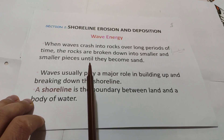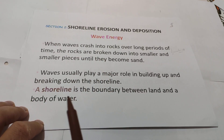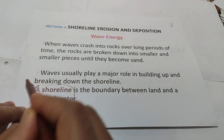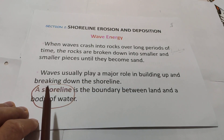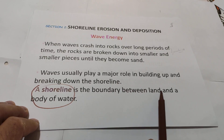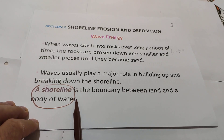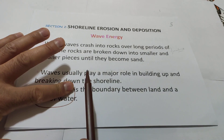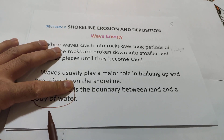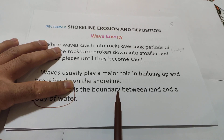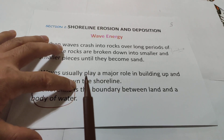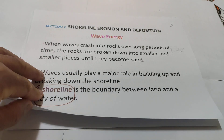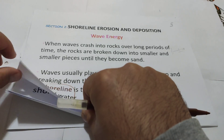There is a difference between shoreline and beach — don't forget that. Shoreline is a new definition for us. Shoreline is the boundary between land and a body of water. In an exam they may ask directly: what is shoreline? The answer is: it is the boundary between land and body of water. We have to memorize that definition.